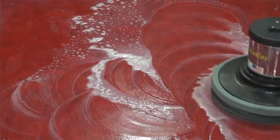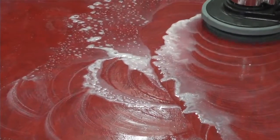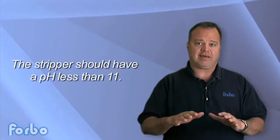In instances where floors have been improperly maintained or have been damaged, restorative maintenance may be required. These recommendations will vary from building to building and often from room to room. For example, if many coats of finish have been applied over time, you may need to strip the floor. If you do need to strip the floor, the stripper should have a pH less than 11.